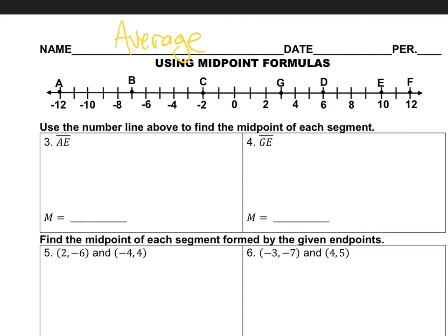Let's say Rodney aced that test last week — he got 100. But then next week's test, he got a 50. He forgot his notes in the bathroom, and his sister was in the bathroom doing her hair, so he couldn't get to the notes. It was a timed test, so he took it without his notes and got a 50. So he got 100 on the first one, 50 on the second. What is Rodney's average test score? You take 100, add 50, divide by two, and you get 75.